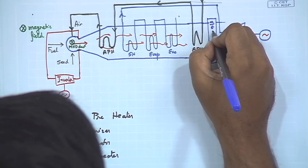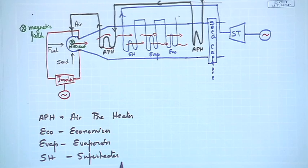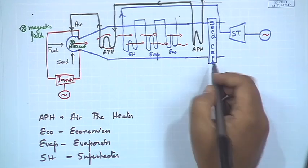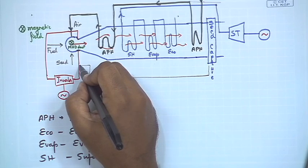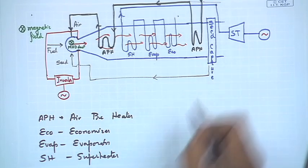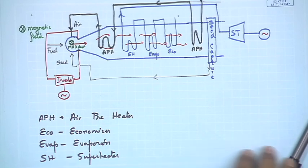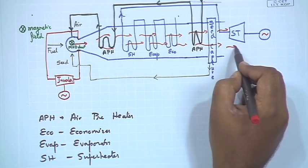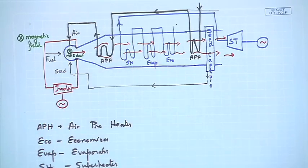Last but not least, very very important: seed capture. The seed particles must be captured and sent back for reuse. This is critical because the seed particles are hazardous and we must have a mechanism to capture and recover them — typically done inside an electrostatic precipitator (ESP). The exhaust gases that come out are thereby devoid of seed particles.